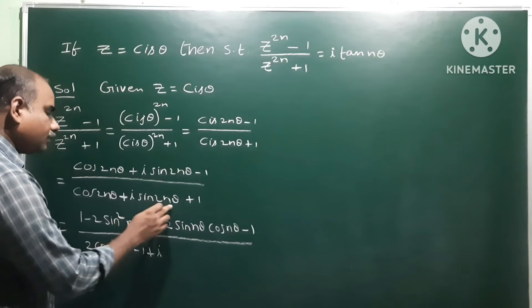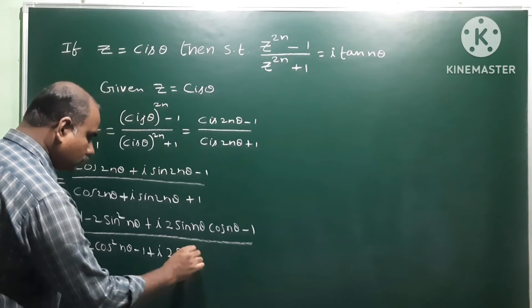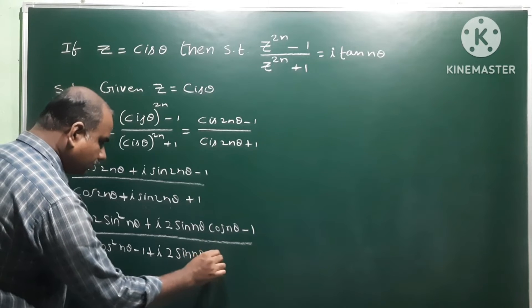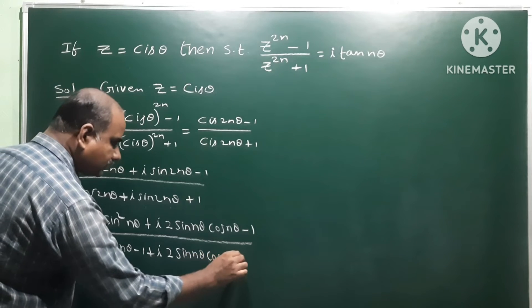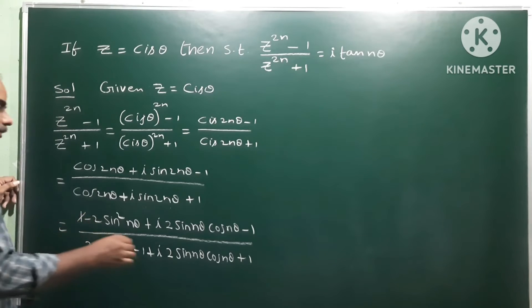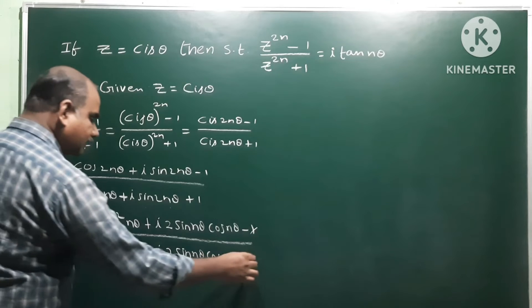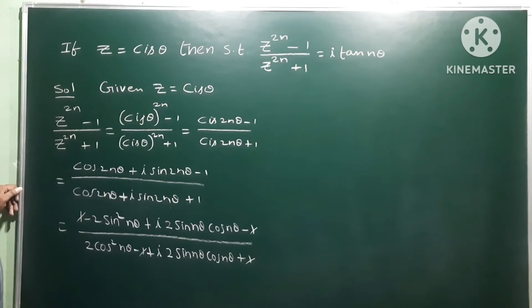So i into sin 2nθ, same formula: 2sin nθ cos nθ plus 1. The plus 1 and minus 1 cancel out. Here also minus 1 and plus 1 cancel. So remaining terms